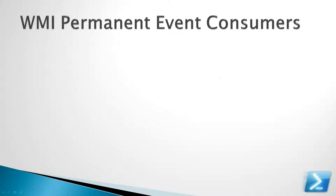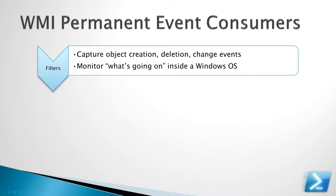So what is a WMI Permanent Event Consumer made up of? First we have a filter, and the filter allows you to define the object events that you would like to capture, which can be creation, deletion, or change events. Filters allow you to monitor what's going on inside a Windows operating system and allows you to respond to those events.